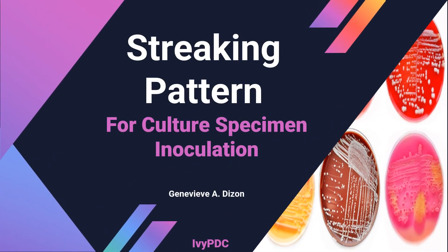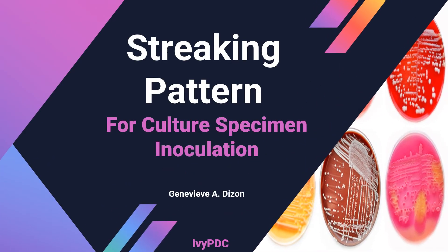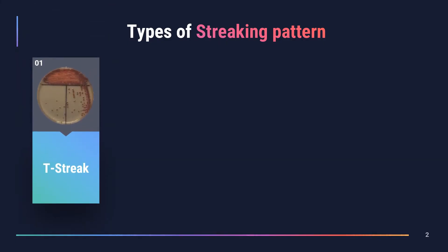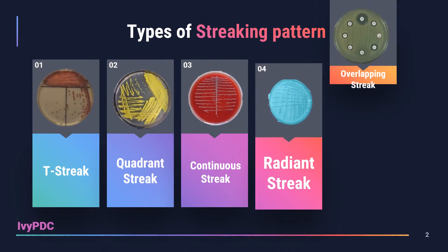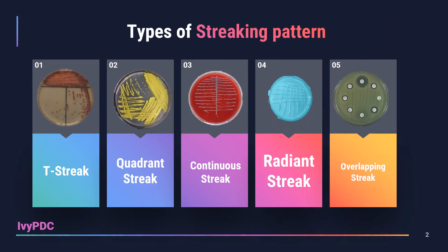Welcome back everyone. This video will show the different streaking patterns used for the inoculation of culture specimens. The different types of streaking patterns are the T-streak, quadrant streak, continuous streak, radiant streak, and overlapping streak. Among all of these different streaking patterns, the two most commonly used are the T-streak and the quadrant streak.